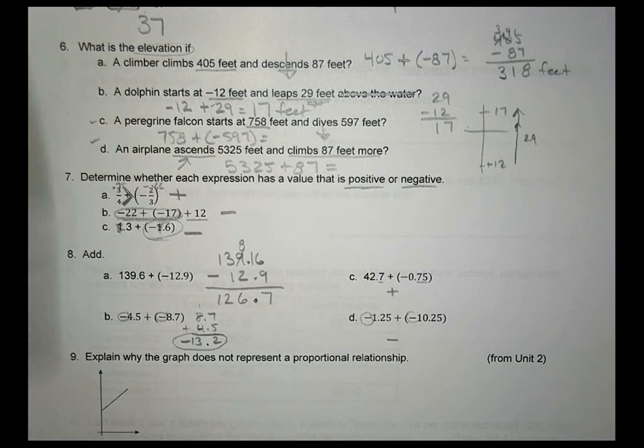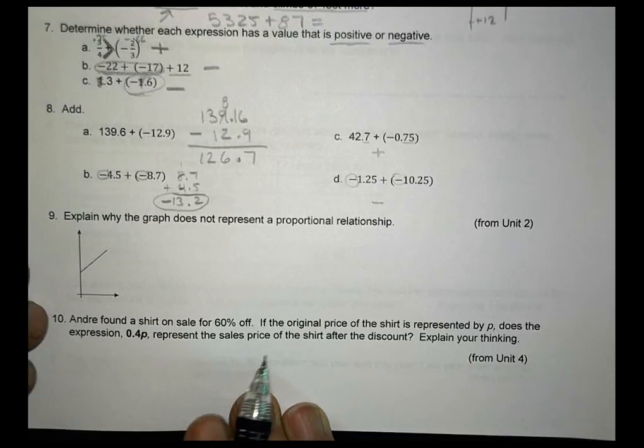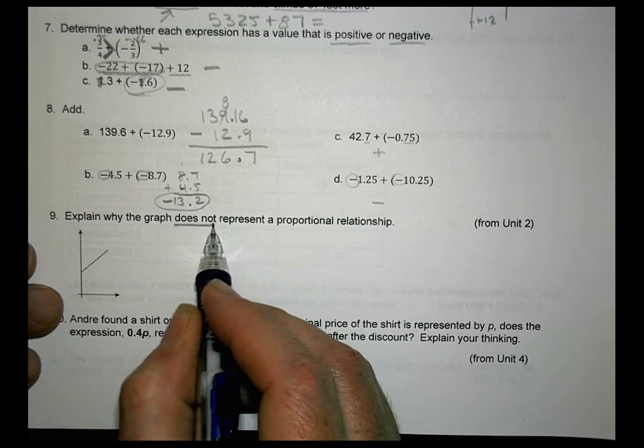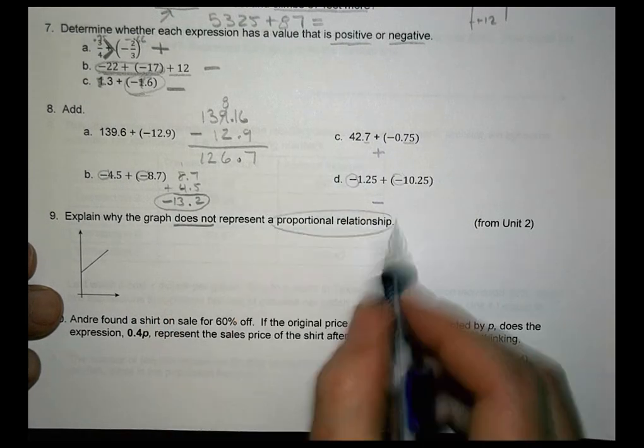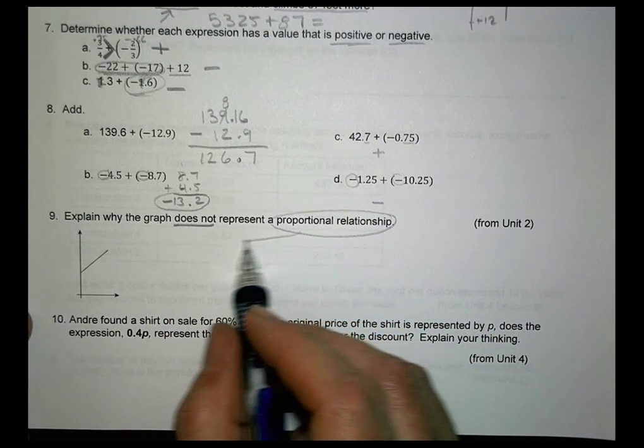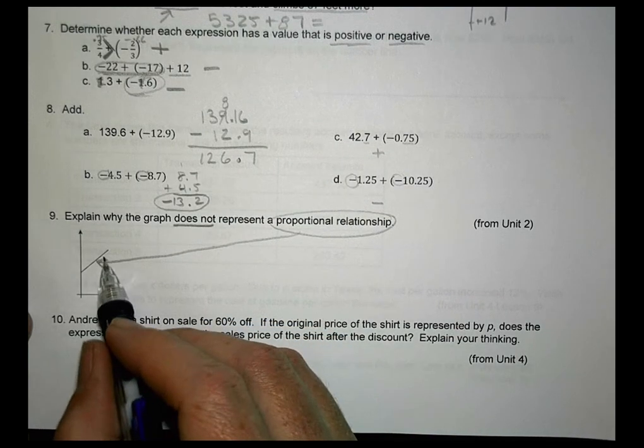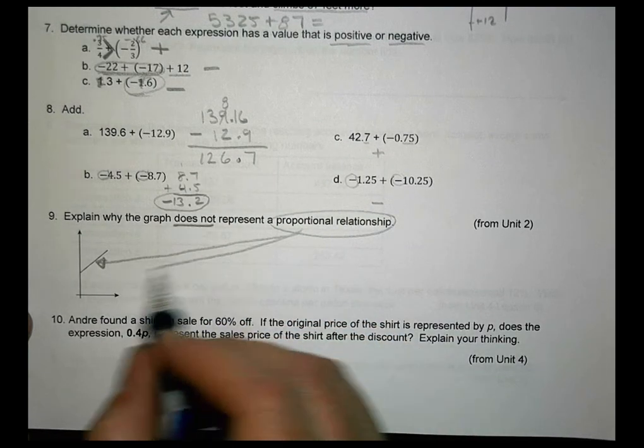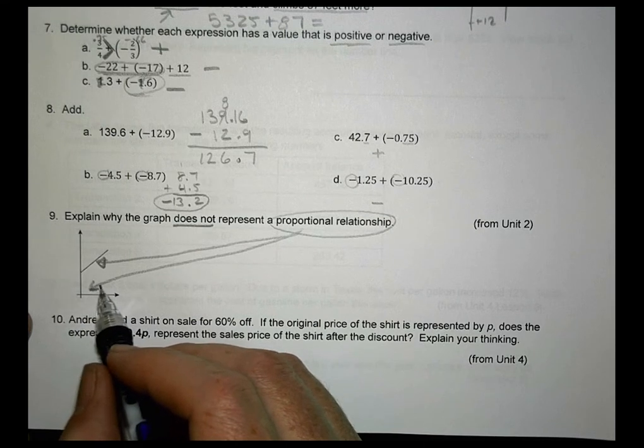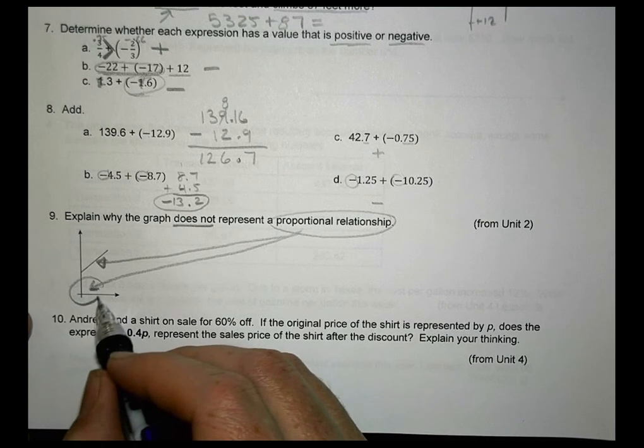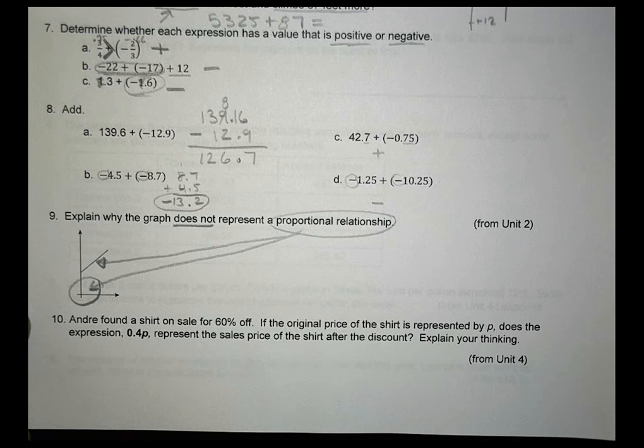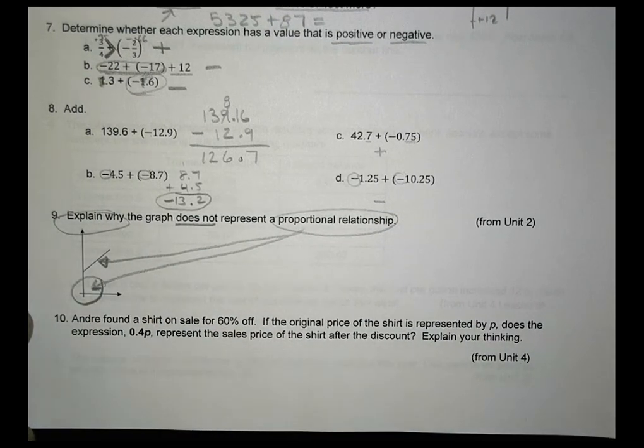Number 9 asks you to explain why the graph does not represent a proportional relationship here. So things you want to look at, proportional relationship, it should be linear, which it is linear. But you also want to look at one key fact, and I can point it out right here. Something is not quite right, right down there. But you explain why that is.